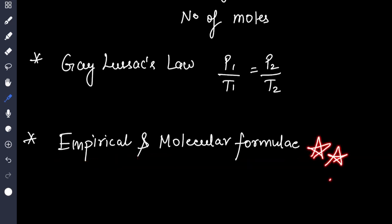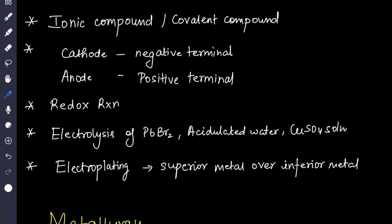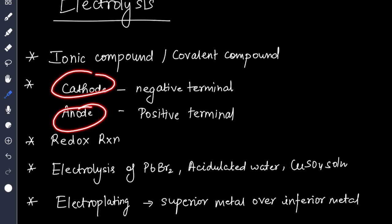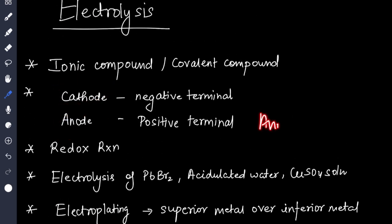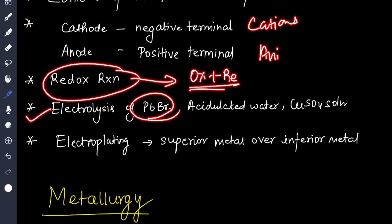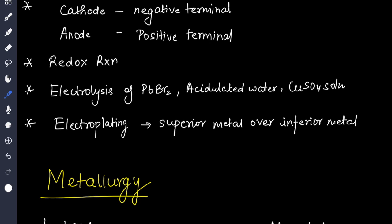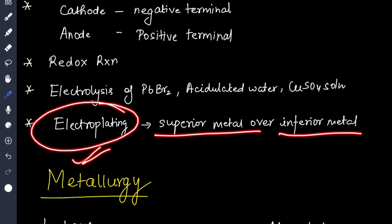For electrolysis, difference between ionic and covalent compound. Then what is cathode, anode, where do anions migrate, where do cations migrate. Redox reaction which is oxidation plus reduction. Electrolysis of PbBr2, acidulated water, then CuSO4 solution. Electroplating, what is the definition? Superior metal over inferior metal, this is plated.